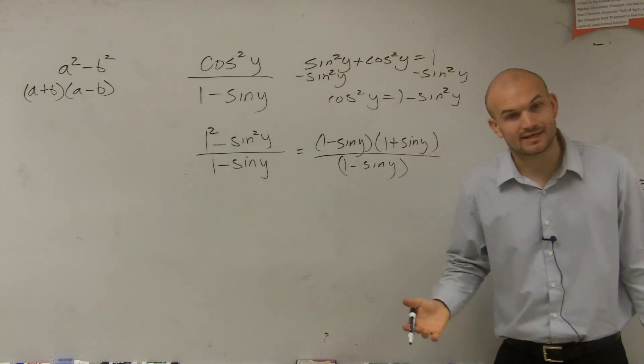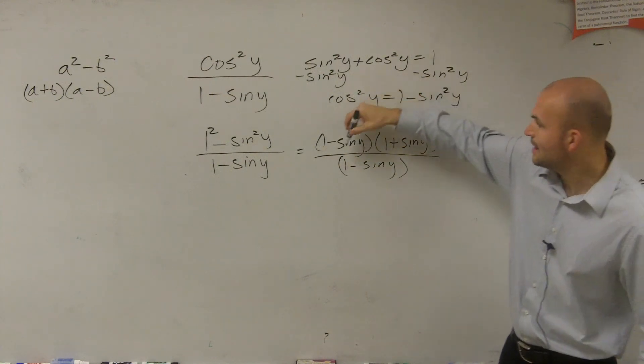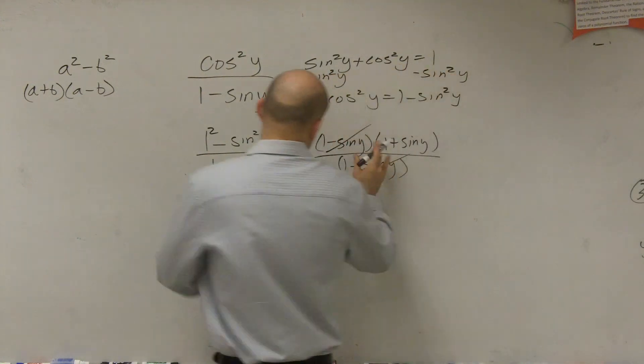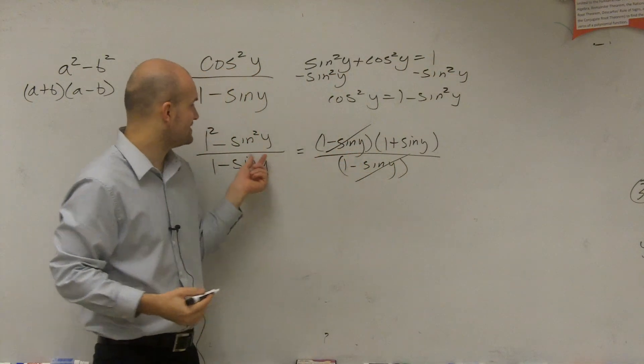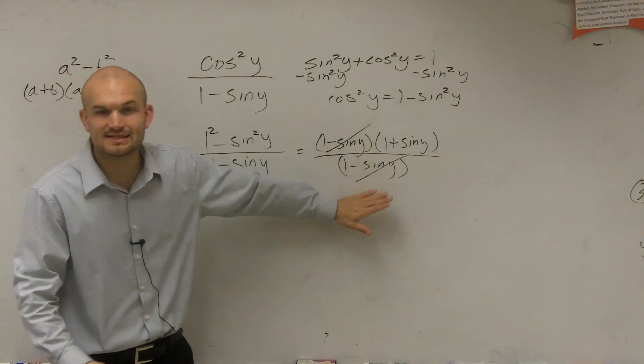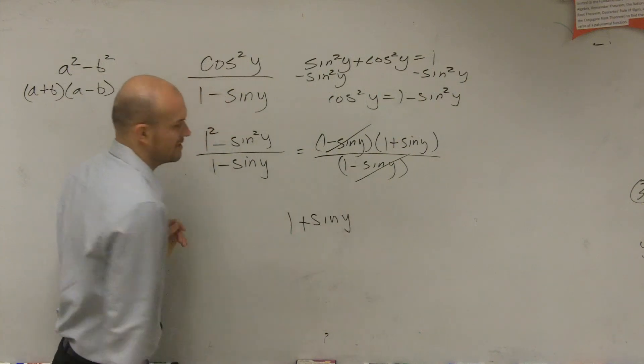And the reason why I'd write it like that is because now this singular term, since these are multiplied by, I can now divide these out. And because now I'm using multiplication, when you had addition, you couldn't just simply cross them out. But now you have multiplication, and now you can divide these out to 1. And your final answer is 1 plus sine of y.